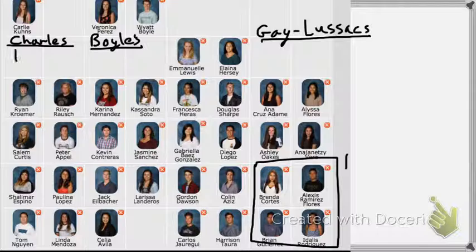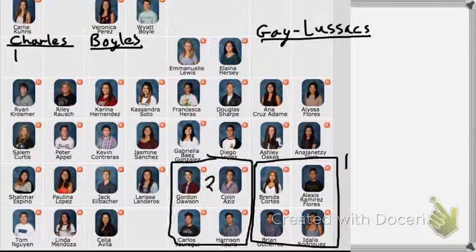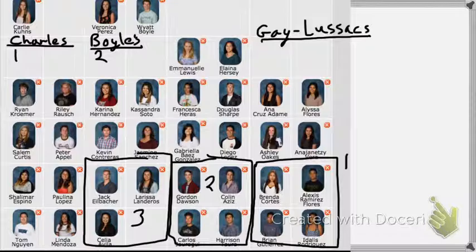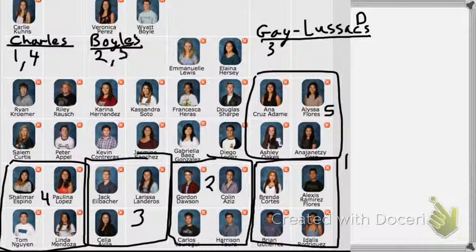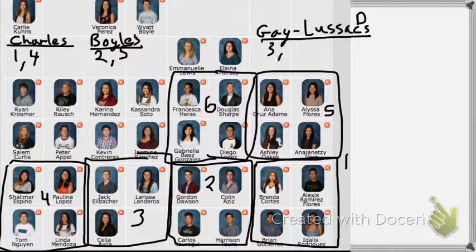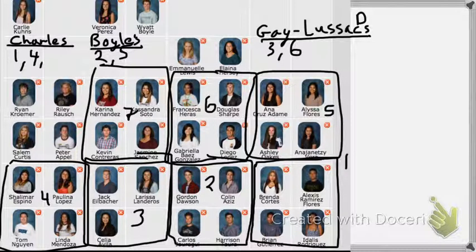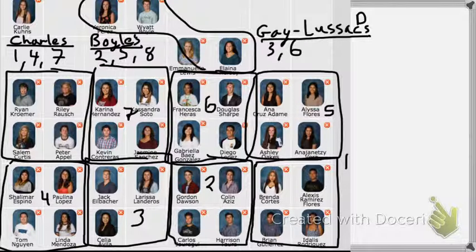Group one, you will be Charles' Law. Family two, you will be Boyle's Law. Family three, you will be Gay-Lussac's Law. Family four, back to Charles'. Family five, to Boyle's. Family six, to Gay-Lussac's. Seven, to Charles'. Eight, to Boyle's. Nine, to Gay-Lussac's.